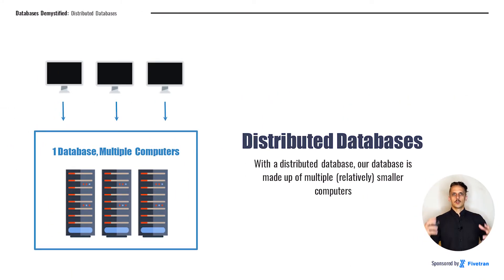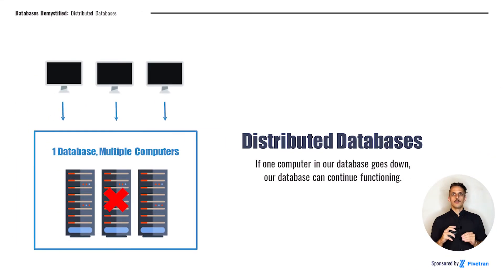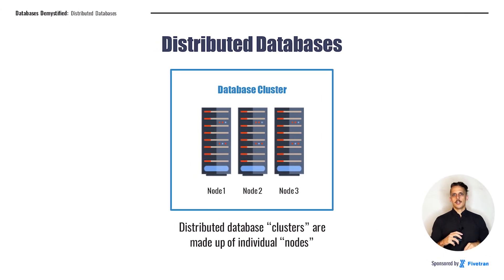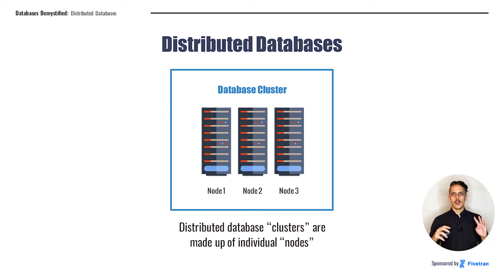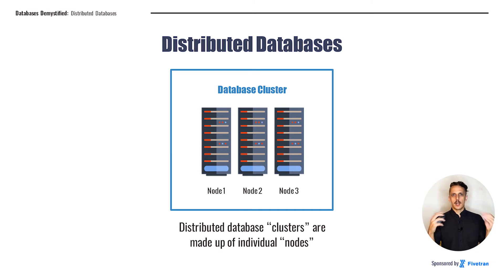And that brings us to distributed databases. With a distributed database, our database is actually made up of multiple relatively smaller computers that act together as one. If one computer in our database goes down, our database can continue functioning. Not only can we deal with more data this way, but we also get improved fault tolerance. In general, when talking about a distributed database made up of multiple computers, we call that a cluster. We use the term node to describe the individual computing machines that make up the distributed database cluster. So a cluster made up of four nodes means there's one database comprised of four individual computers networked together and acting as one.